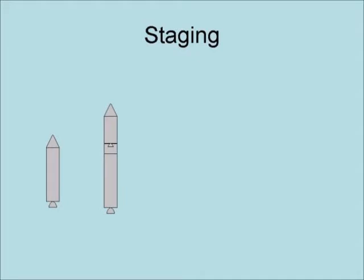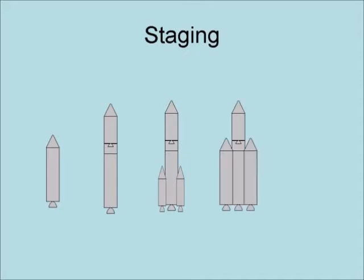Staging increases the total delta-V of a rocket by boosting the upper stage or stages to a higher starting velocity. Types of staging include no staging at all, which is a single stage rocket; stack stages, which have one or more upper stages on top of a booster stage; small boosters strapped on to a larger core stage; and strap-on boosters of equal size to the core stage, which usually use a cross feed of propellant between the boosters and the core.